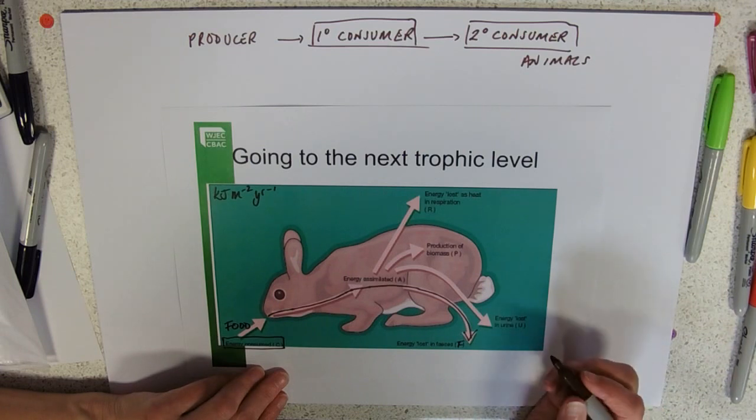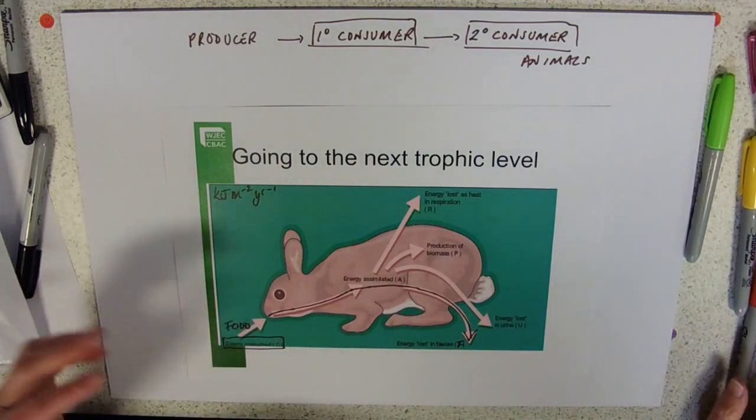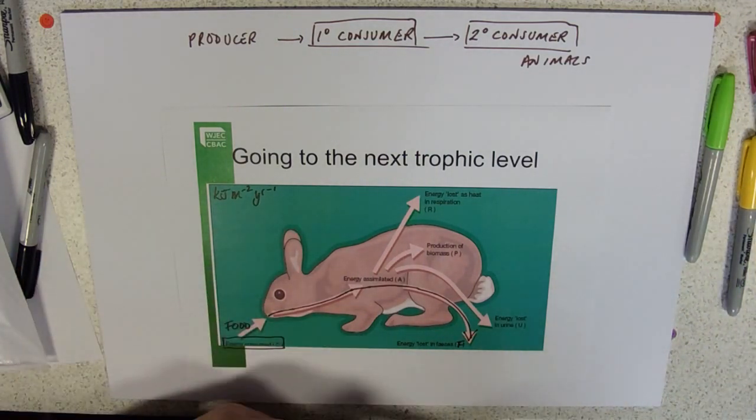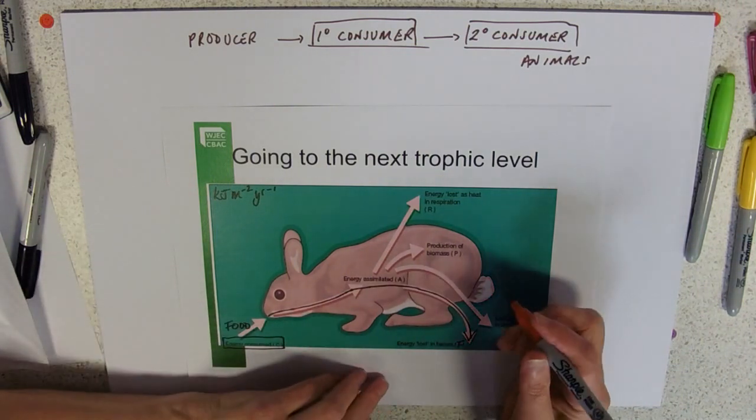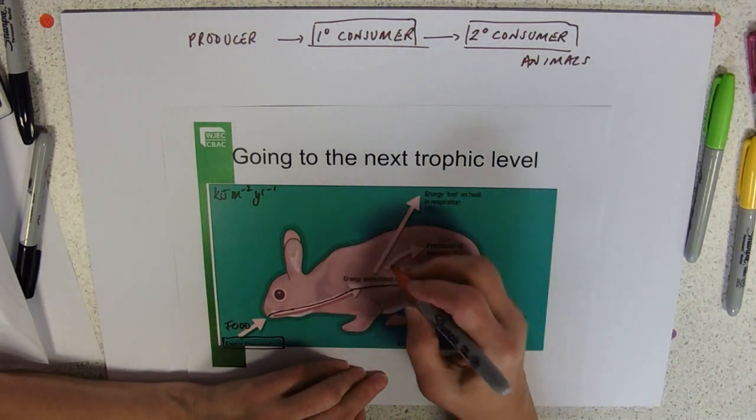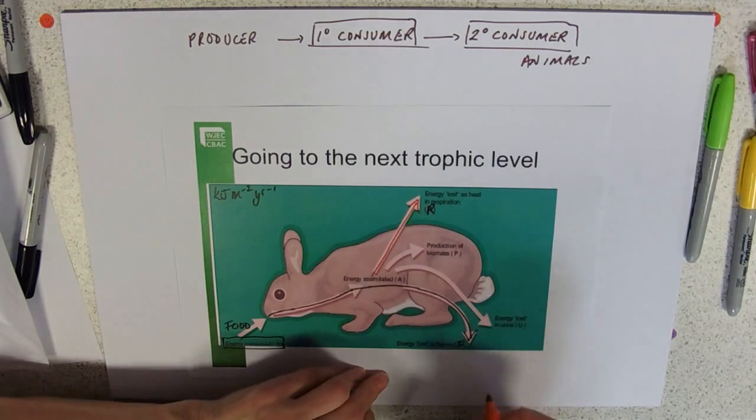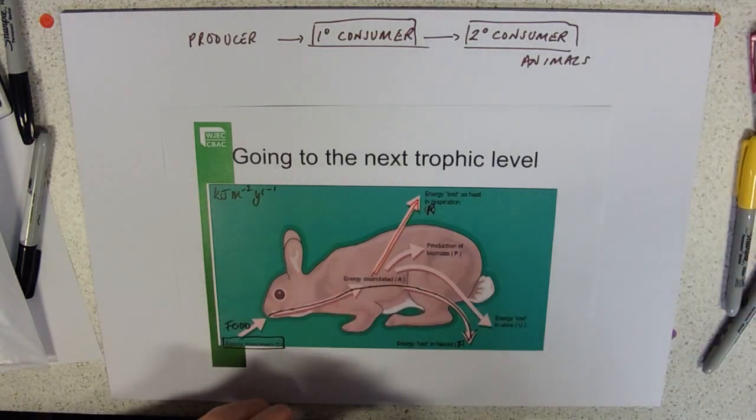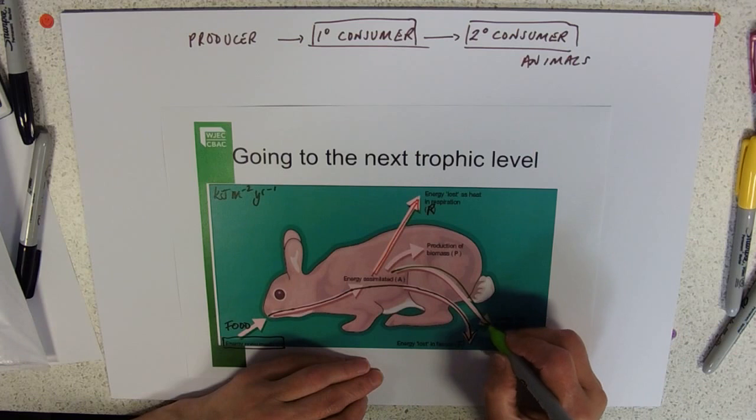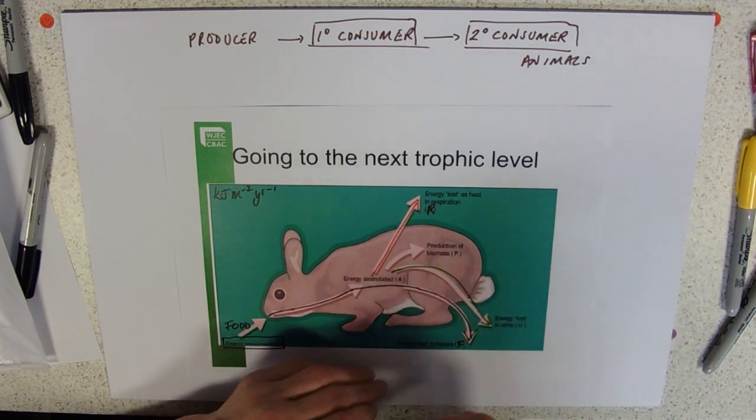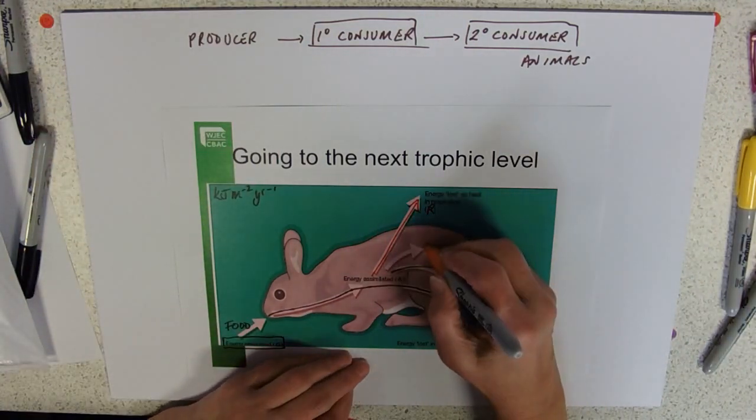Of the food that is absorbed, it is then assimilated. That means it gets taken into cells and has stuff done with it. Some of it is used to fuel our own respiration, which we'll label R. Some of it, the excess amino acids, are converted into urea or other nitrogenous wastes and lost in urine. The rest of it can go to produce new bunny stuff, new biomass.